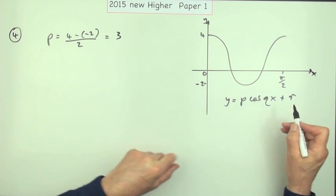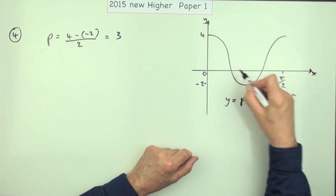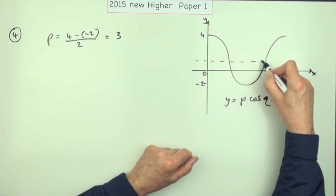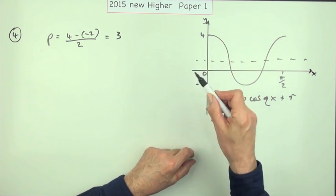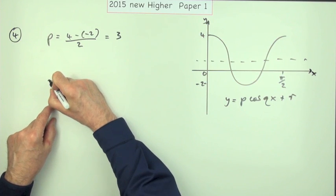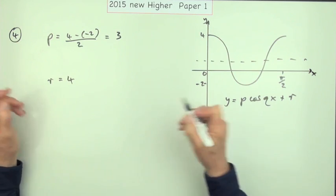And how much has the graph been shifted up? Because it's not oscillating about the x-axis, it's oscillating about this point here. Where would that point be? Well, if it's gone up three from there, that must be at one. So I could put R down next. If you wanted any working, which you don't, it would have been four take away three, which equals one.